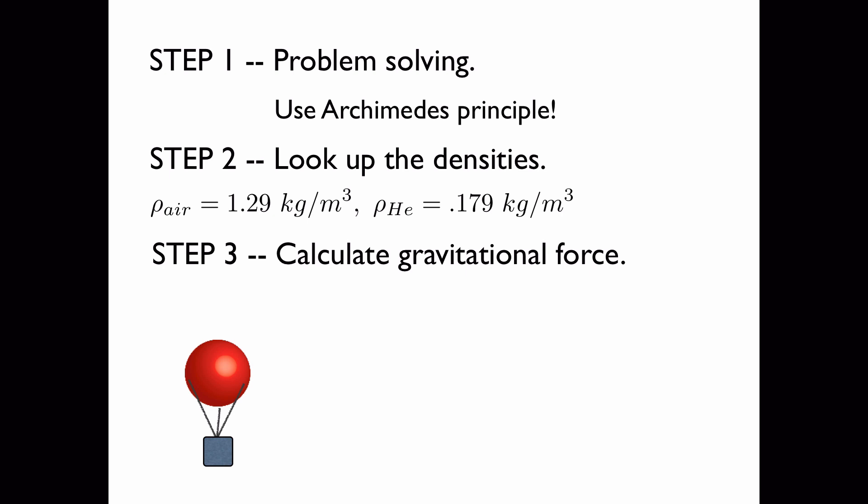Next, we'll calculate the gravitational force downward on the whole system. As stated, the mass of the weight and the other things like the rubber and the balloon and the strings is 205 grams or 0.205 kilograms.